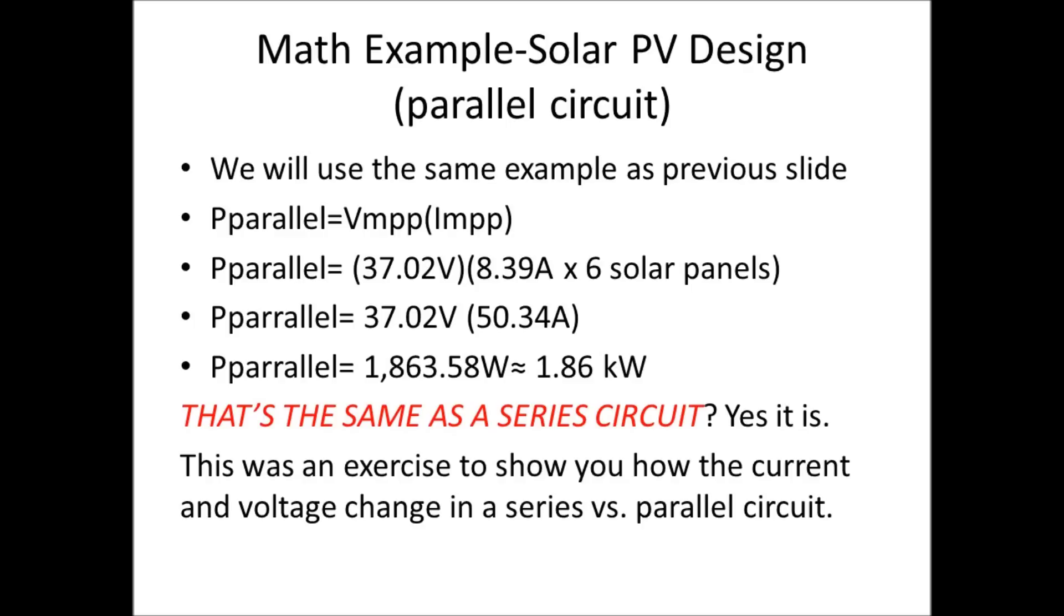Remember, in a parallel circuit the voltage stays the same, the current increases. Driving that home again. So we're looking at 50.34 amps total for the six solar panels times 37.02 volts. We're back there again, 1.86 kilowatts. That's the same as a series circuit. Yes, it is. This was just a very simple exercise to show you how the current and voltage change in a series versus a parallel circuit.